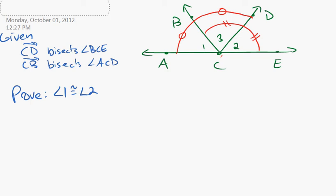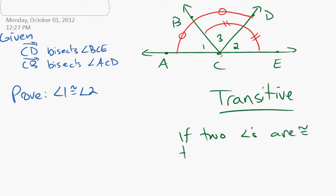This is called the transitive property. This is a really useful property in mathematics. And it states if two angles are congruent to the same angle, then they are congruent to each other.